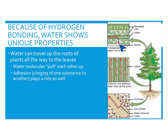Water evaporating from the leaf removes water molecules out of the leaf, and all of the water molecules sticking together pull each other all the way from the roots — it's a very strong force. In addition, adhesion plays a role: water molecules actually stick to the sides of the xylem tubes, which helps the water to be pulled along. Because of hydrogen bonding, water can move from the roots all the way up to the leaves of a tree.